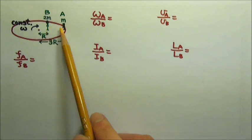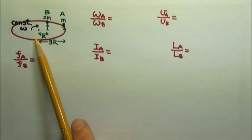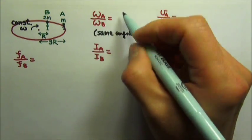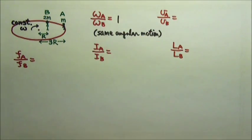The two people rotate together on the same merry-go-round so they have the same angular motion. So the omega ratio is 1 because they have the same angular speed.